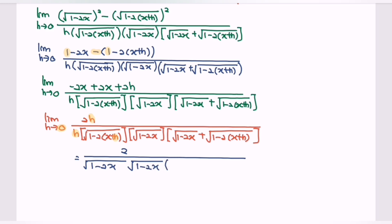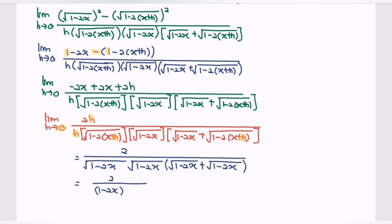Next, we can cancel h from numerator and denominator. Then substituting h equals 0 into the remaining expression, we have square root of 1 minus 2x in the denominator bracket, and substituting h equals 0 gives another square root of 1 minus 2x. So we will have 2 over 1 minus 2x, multiplied by 2, multiplied by square root of 1 minus 2x.